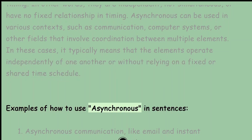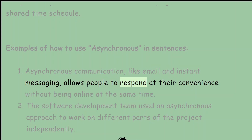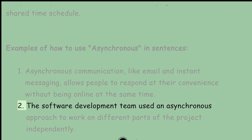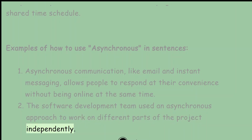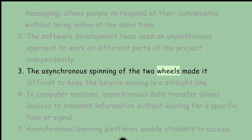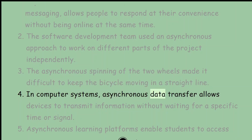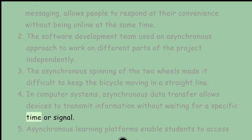Examples of how to use asynchronous in sentences. 1. Asynchronous communication, like email and instant messaging, allows people to respond at their convenience without being online at the same time. 2. The software development team used an asynchronous approach to work on different parts of the project independently. 3. The asynchronous spinning of the two wheels made it difficult to keep the bicycle moving in a straight line. 4. In computer systems, asynchronous data transfer allows devices to transmit information without waiting for a specific time or signal.